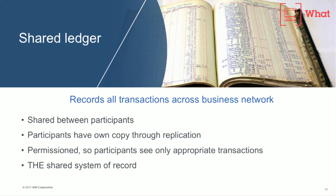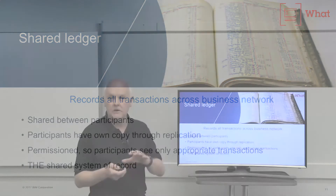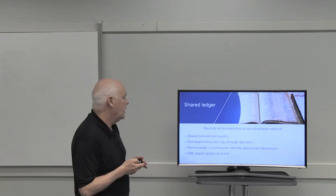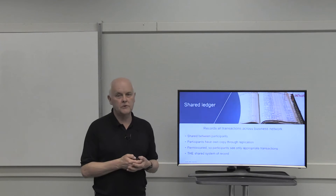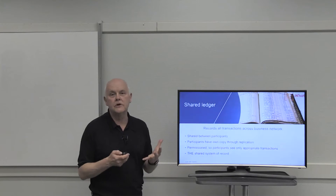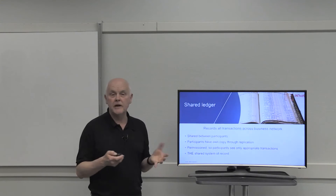All the participants in the business network have their own copy of this distributed ledger, but we have a concept of permissioning in the blockchain network, so we can actually control who can see what parts of the ledger, and it becomes the shared system of record across the business network, with the net benefit of increasing the trust within that network.